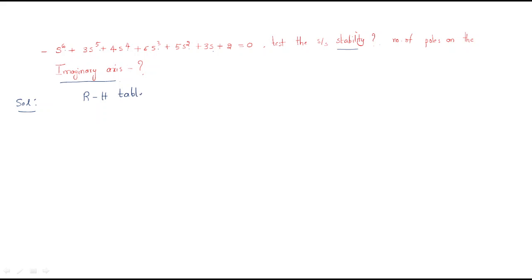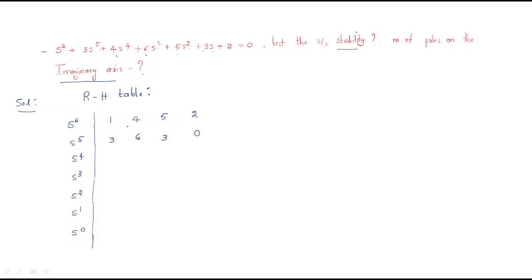Building the RH table: write rows for s⁶ through s⁰. The s⁶ row coefficients are 1, 4, 5, 2 and the s⁵ row coefficients are 3, 6, 3, 0. For the s⁴ row, computing: (3×4 − 1×6)/3 = (12−6)/3 = 2; (3×5 − 1×3)/3 = (15−3)/3 = 4; and (3×2 − 1×0)/3 = 6/3 = 2.